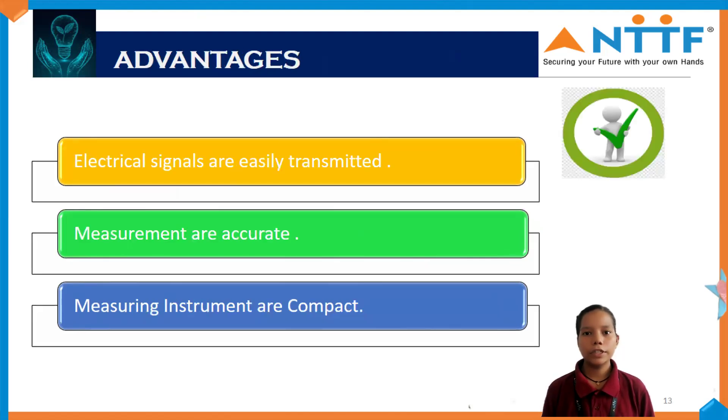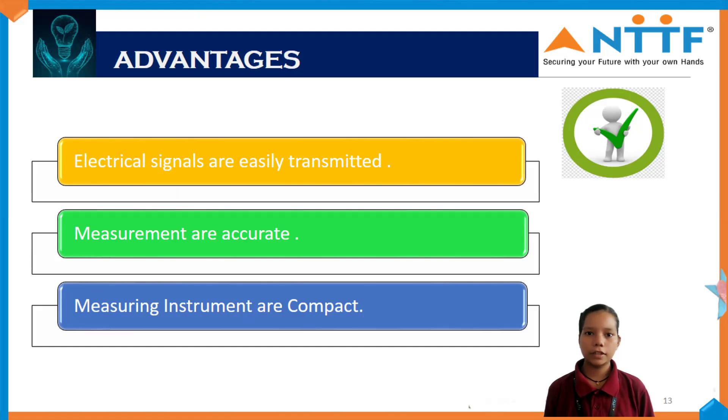Some advantages of the transducer are: electrical signals are easily transmitted, measurements are accurate, and measuring instruments are compact.